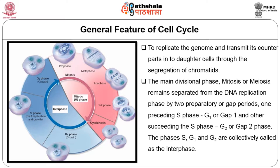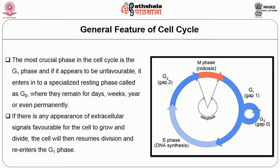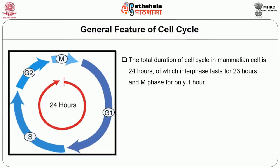One gap period precedes the S phase, called G1 or gap 1 phase, and the other succeeds the S phase, called G2 or gap 2 phase. The phases S, G1 and G2 are collectively called as interphase. The most crucial phase is G1, and if conditions appear unfavorable, the cell enters a specialized resting phase called G0, where it may remain for days, weeks, years or even permanently. If extracellular signals become favorable, the cell resumes division and re-enters G1. The total duration of the cell cycle in mammalian cells is 24 hours, of which interphase lasts 23 hours and M phase only one hour.